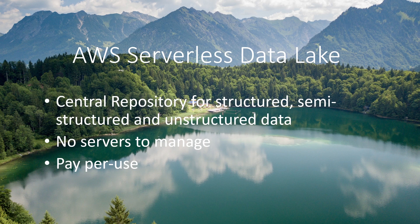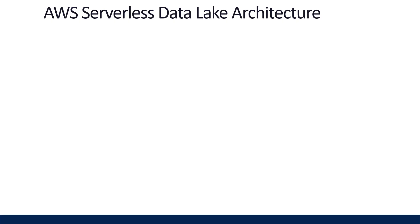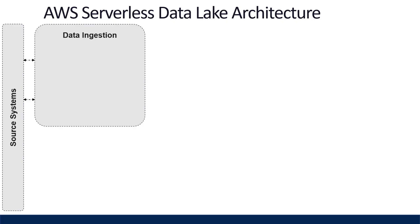This video is really going to focus on the particular AWS services that make up this architecture. The data source layer is a collection of sources that can be outside of the AWS ecosystem that you want to bring into your data lake. They can also already exist in AWS, such as a production RDS database, a NoSQL database such as DynamoDB, or a data stream such as Kinesis Data Streams. This is ultimately the data you want to integrate into your data lake.